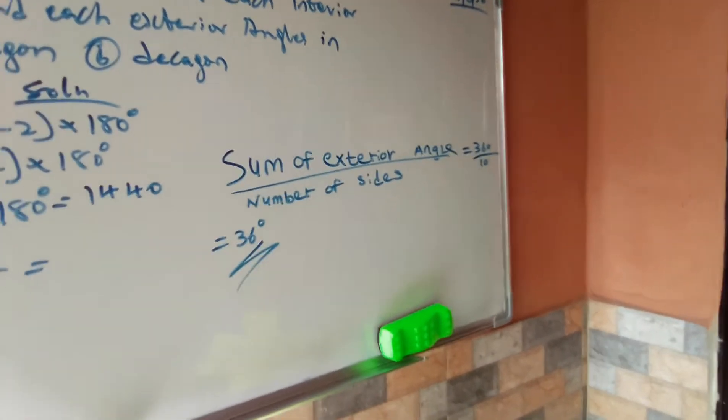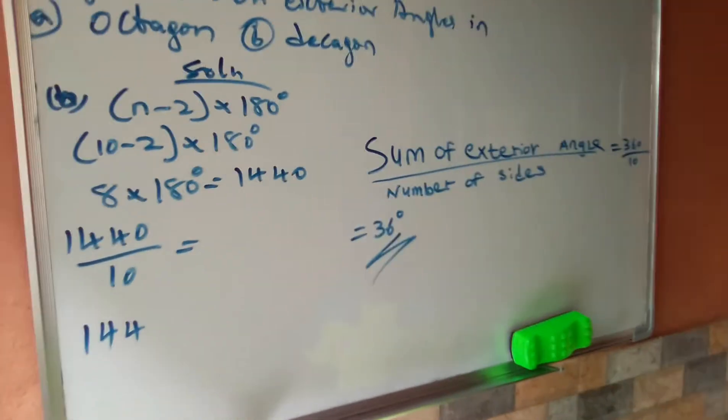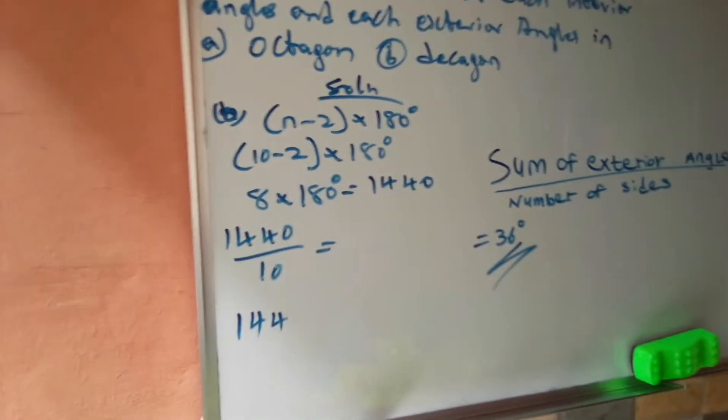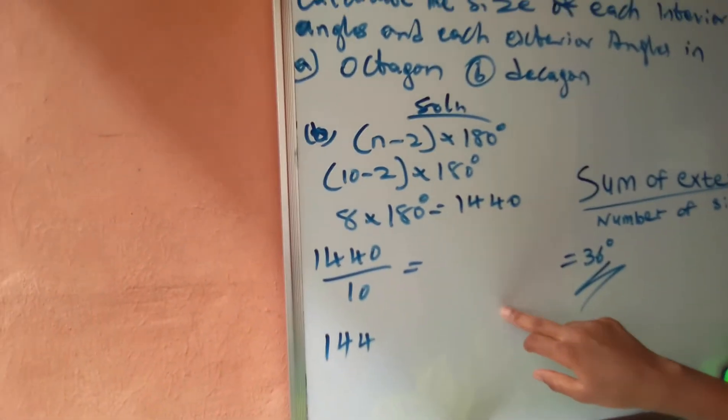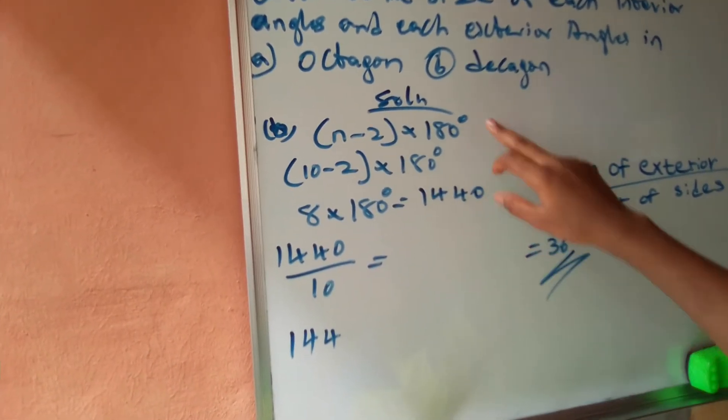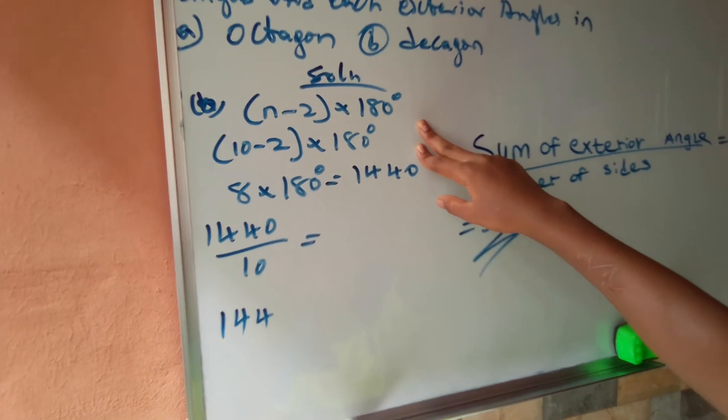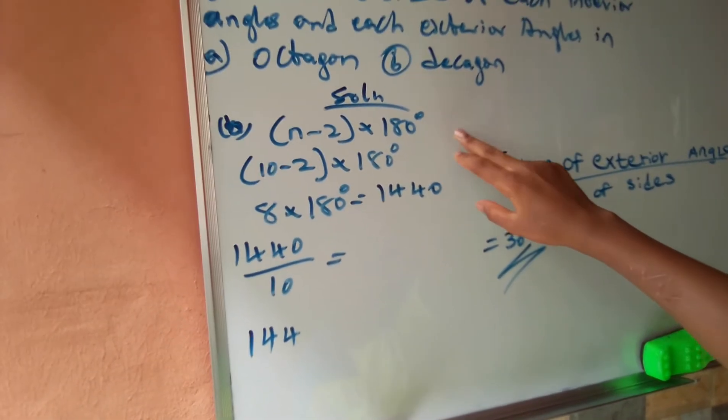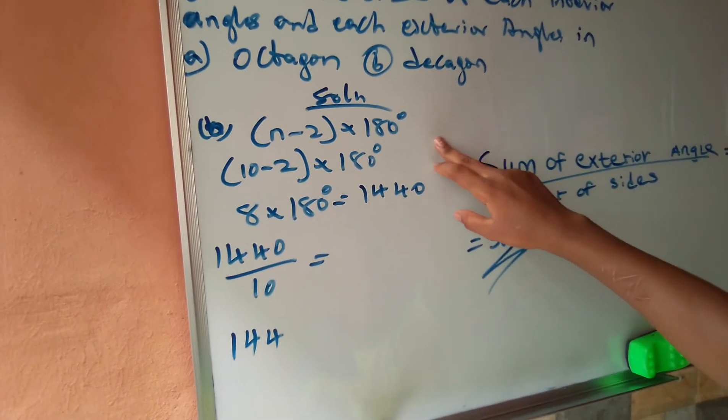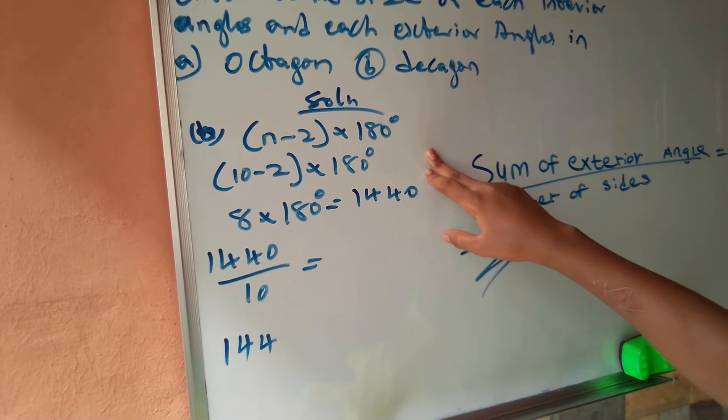How did you solve it? How did you get this one? Explain how you get this one. N minus 2 is the formula to use and solve the interior angle.